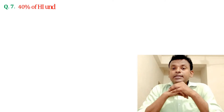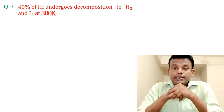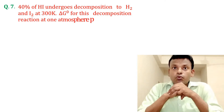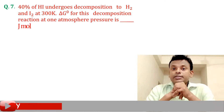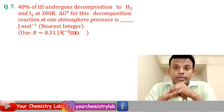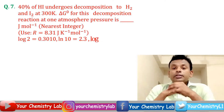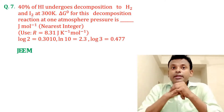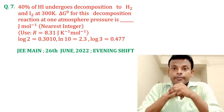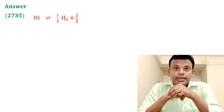Question seven: 40 percent of HI undergoes decomposition to H2 and I2 at 300 Kelvin. ΔG° for this decomposition reaction at one atmosphere pressure is blank joules per mole (nearest integer). Given R = 8.31 joules per Kelvin per mole. This question was set in JEE Main 26th June 2022 evening shift.